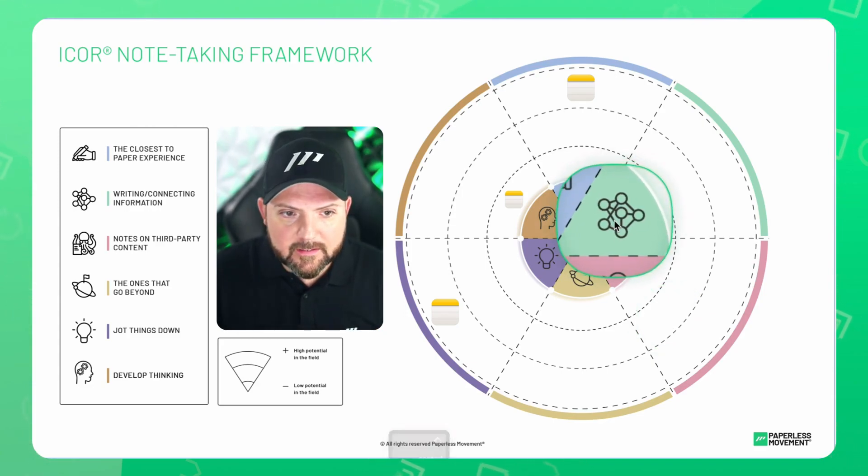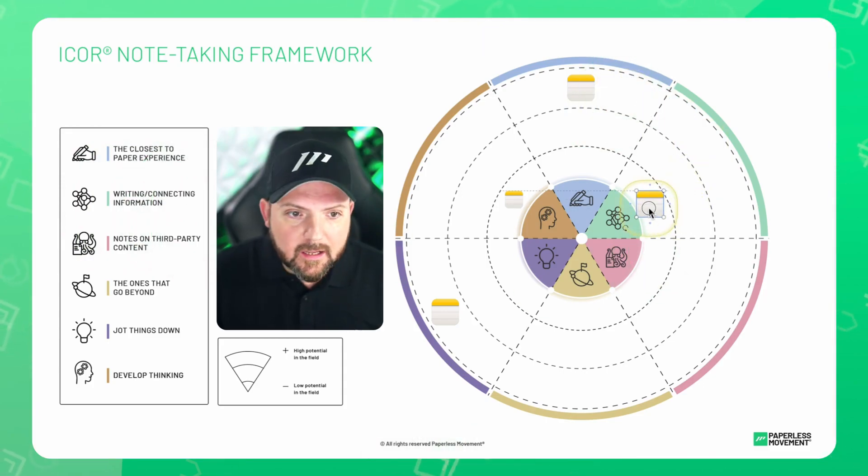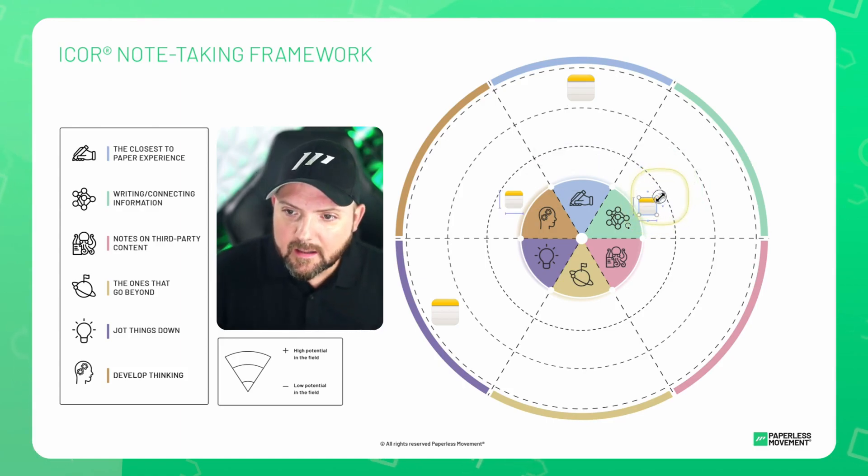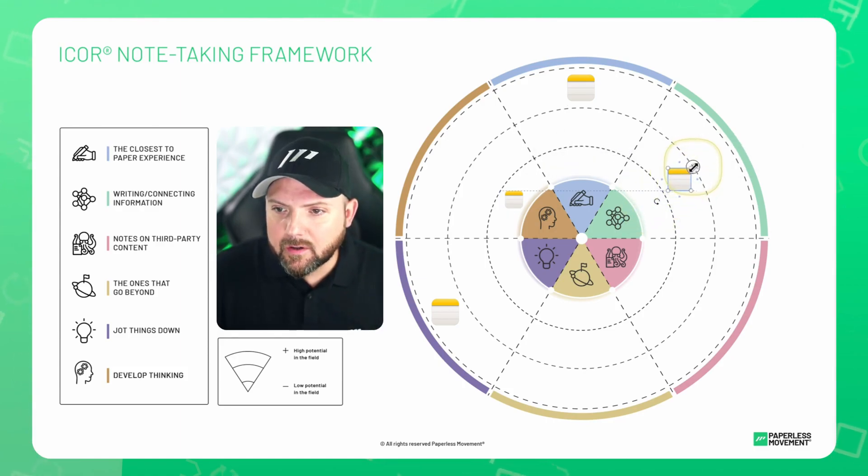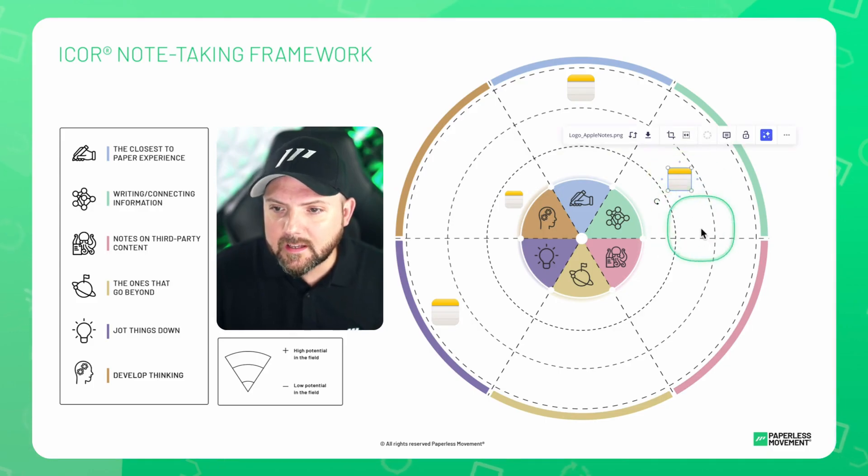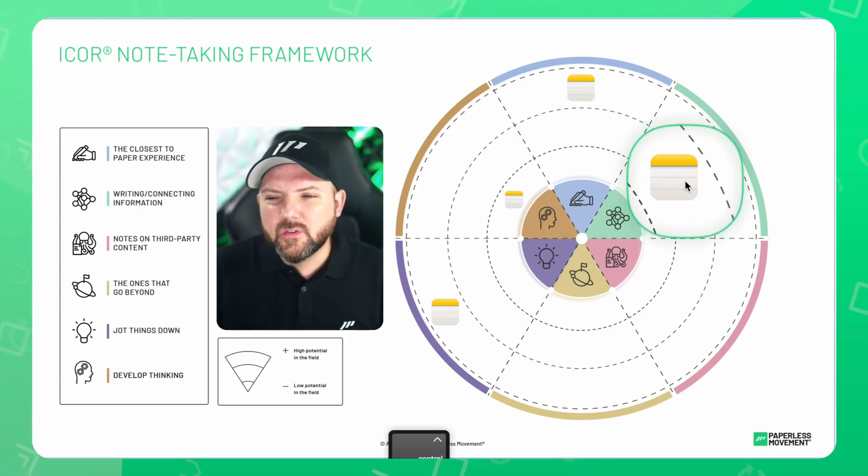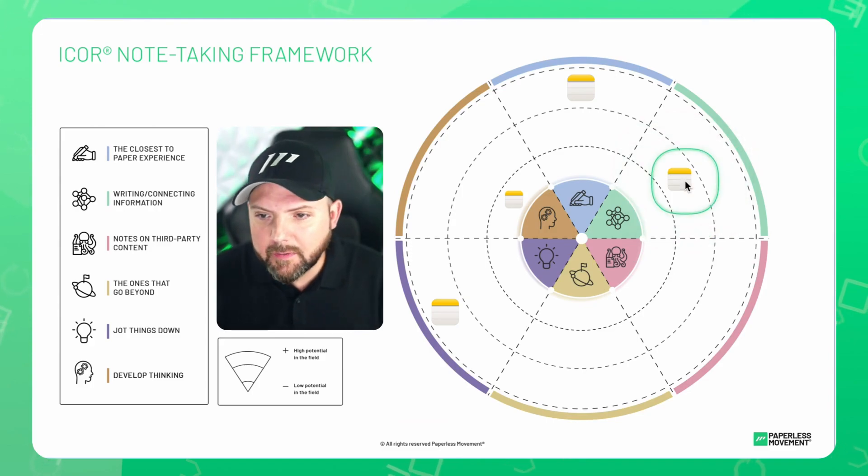So what else do we have? This one, which is writing connecting information. This means this is where you really connect the information like using backlinks and things like that. And I think we can bring it into the middle because tags can be used in Apple Notes and therefore it allows you some kind of connecting information and retrieve it easier. But it's not fully fledged like in Obsidian or other tools.